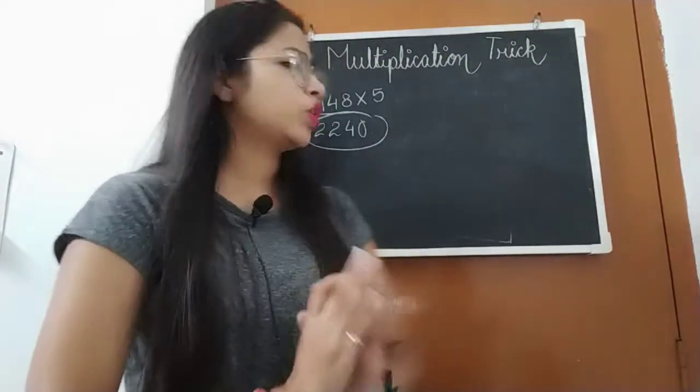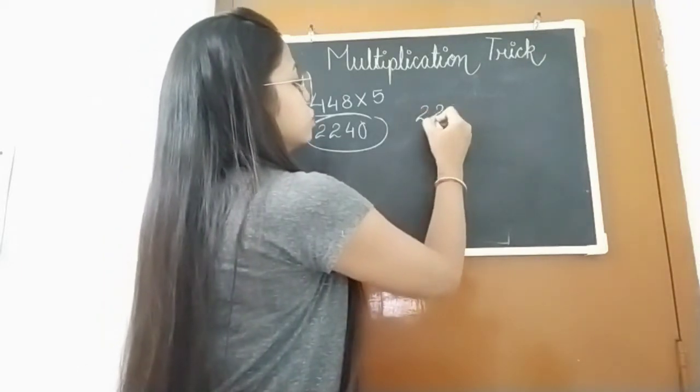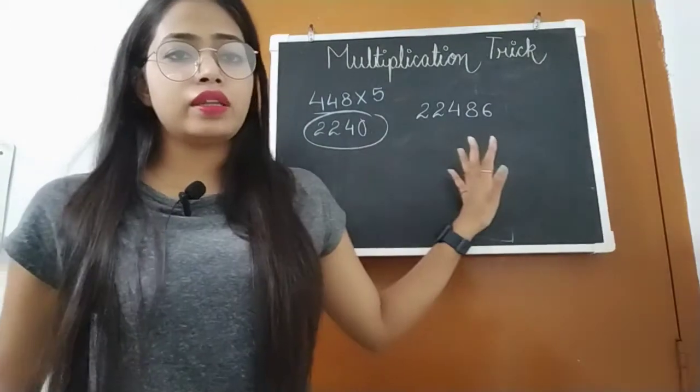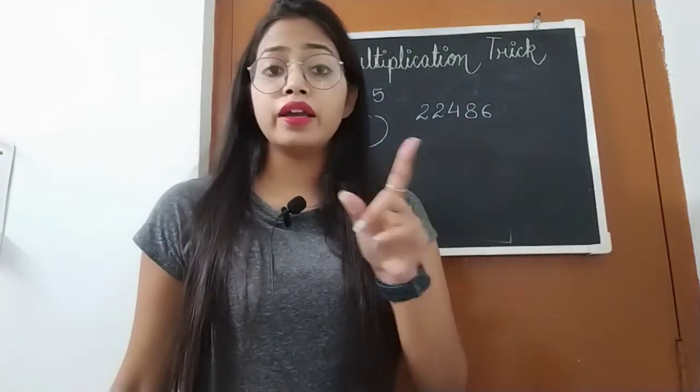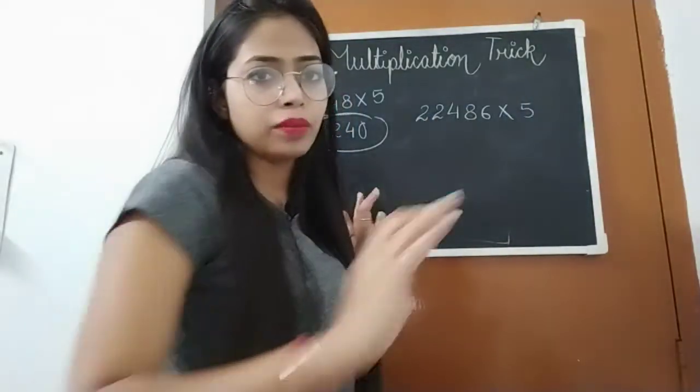Let's look at another example. Let's take the number 22,486. Now we have to multiply this number by 5.